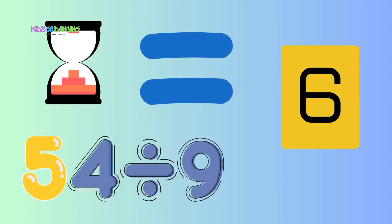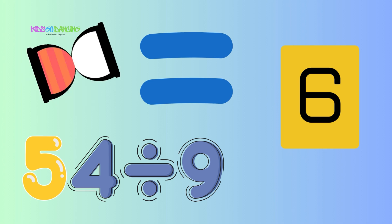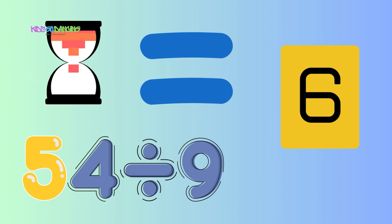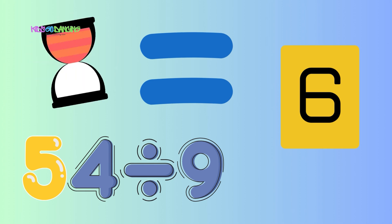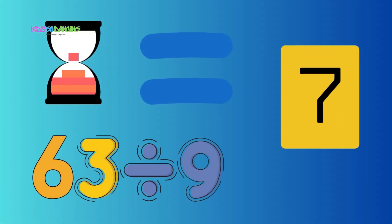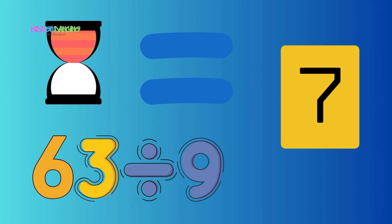54 divided by 9 is 6. Breaking numbers is a fun trick. 63 divided by 9 is 7. Math is cool, it feels like heaven.